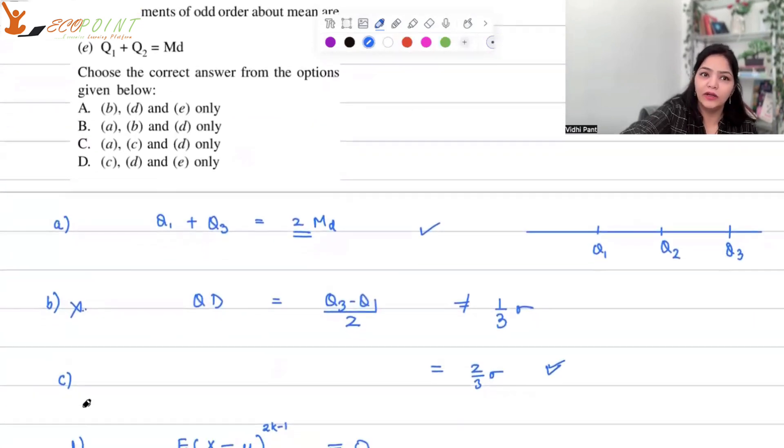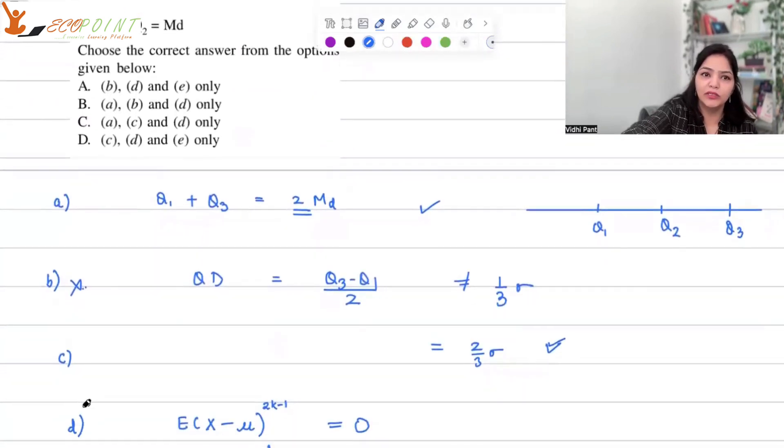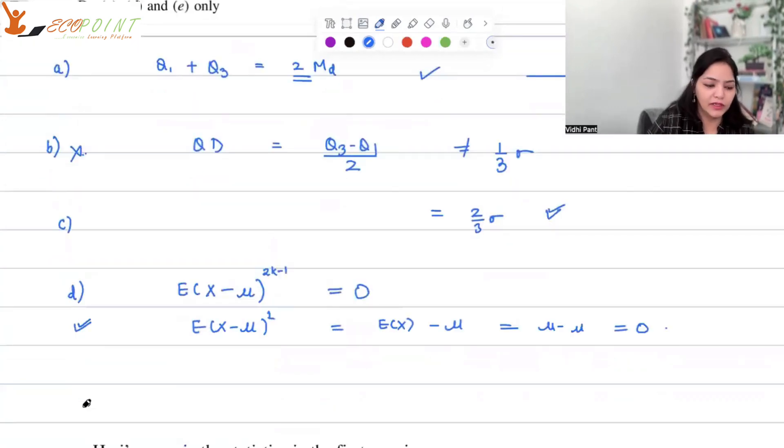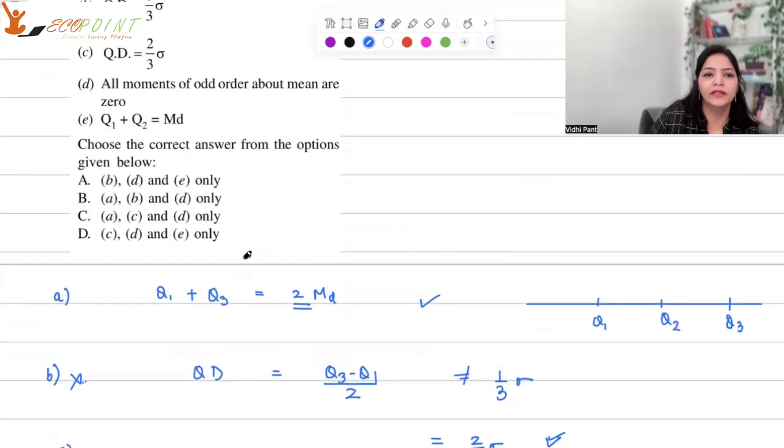And then the E statement is Q1 plus Q2 is equal to median. Q2 itself is median. This is absolutely not correct. So what statements are correct? A statement is correct, C is correct, and D is correct. Let us look at the options. We can see it in option C - A, C, D to be correct.